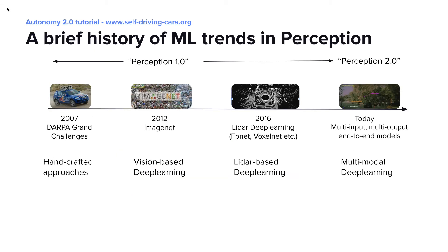Some of the first modern perception systems for self-driving cars were conceived around 2007 in the DARPA challenges. They were primarily geometric computer vision based methods using handcrafted approaches. In 2012, after the conception of ImageNet, we started seeing a lot more image-based deep learning methods replace geometric computer vision methods. A few years later, image-based machine learning methods transferred to other sensor spaces such as lidar and radar point clouds. Up to around that point I would call this Perception 1.0 — a large collection of geometry and machine learning based methods assembled into a complete perception stack with a huge amount of glue code. Today we're seeing perception becoming much more end-to-end with fewer models handling more inputs and producing more outputs. This is what I will call Perception 2.0 and where we're headed.